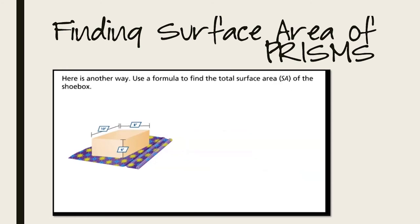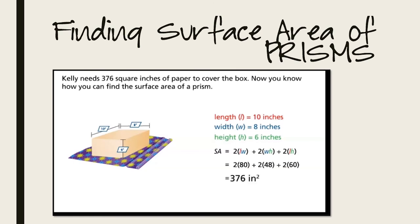Here is another way. Use a formula to find the total surface area, SA, of the shoebox. Kelly needs 376 square inches of paper to cover the box. Now you know how you can find the surface area of a prism.